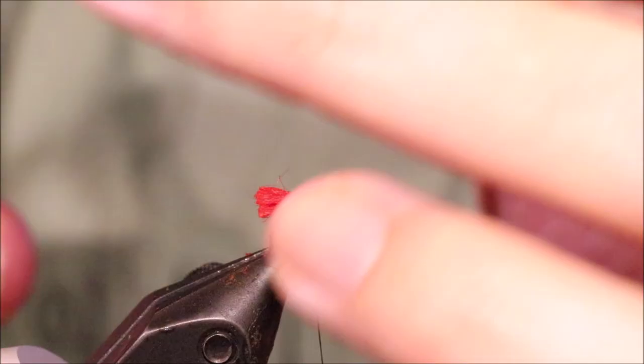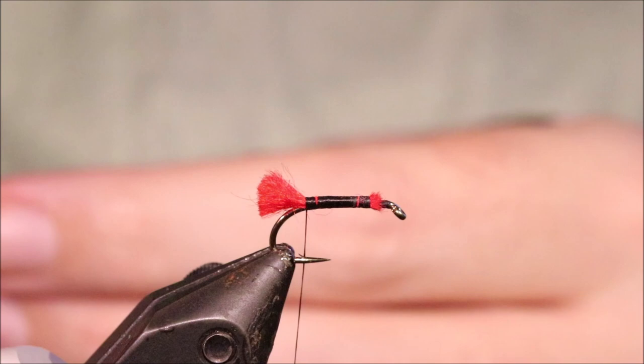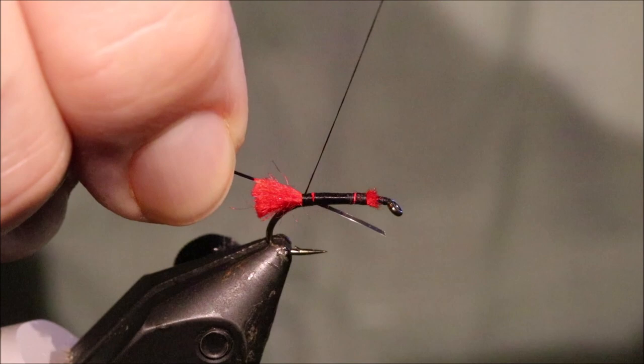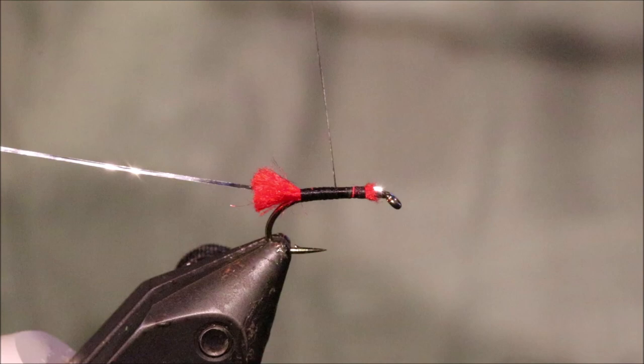So once that's tied in I'm going to come in with my rib. I'm using a flat silver tinsel. You could use oval and it's probably a bit more durable. But I like the flat. I feel like the flat silver is a bit shinier. And you just get the wee glint peeping through a bit better.